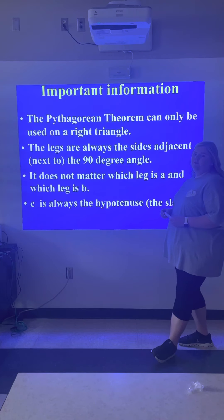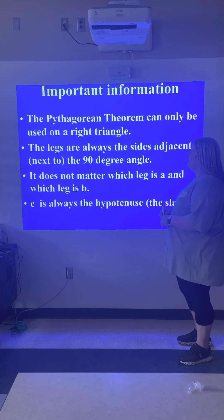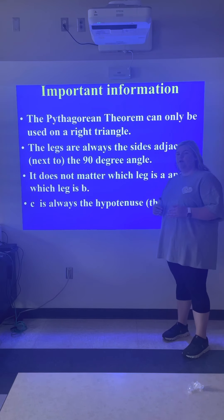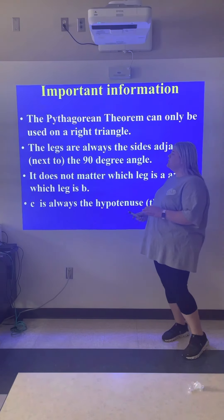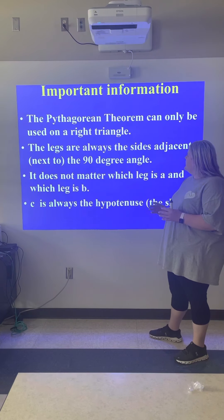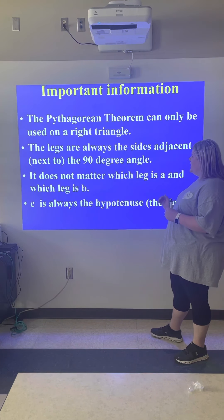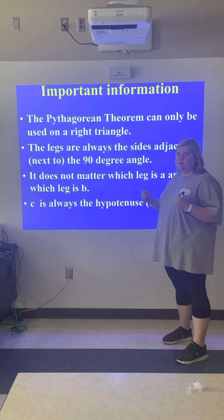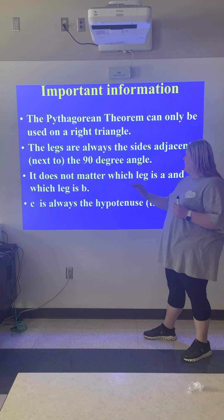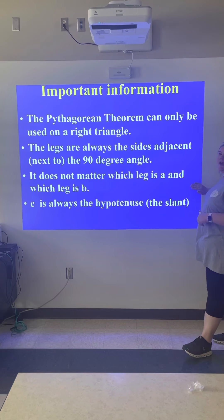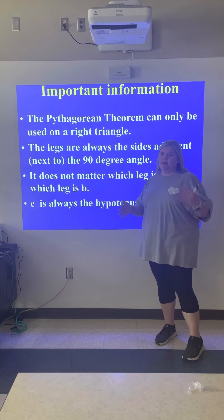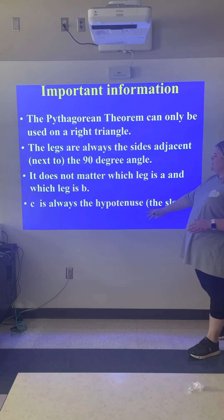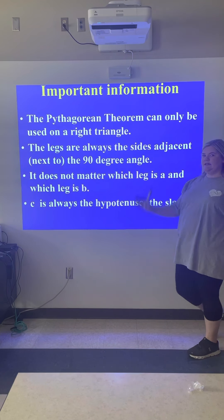Some important information: the Pythagorean Theorem can only be used on a right triangle. The legs are always the sides adjacent to — meaning next to — the 90-degree angle. It does not matter which leg is a and which leg is b; you can plug each in either way. And c is always the hypotenuse, which is always the slant side.